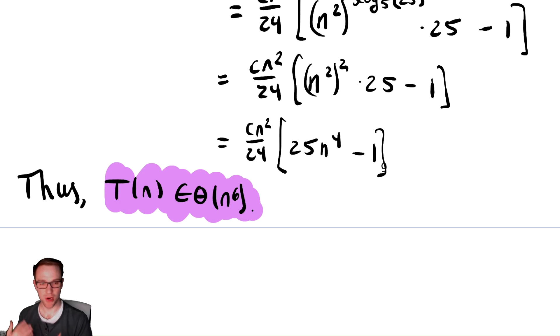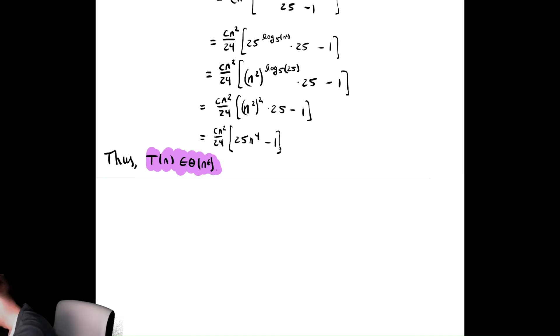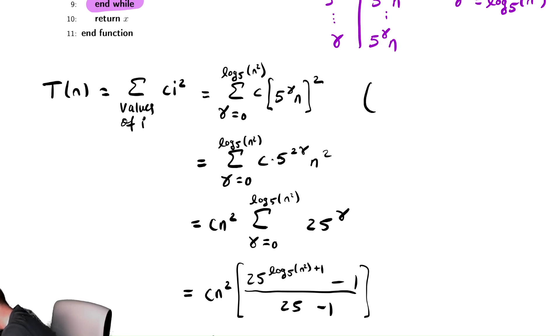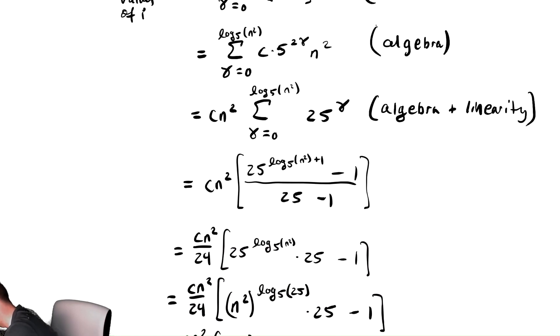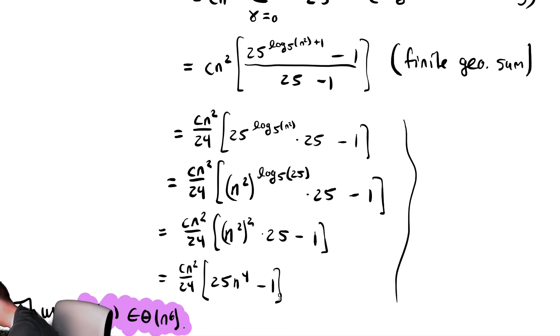And just as we've done in the past, maybe we go back and label our steps just so we can identify what we were doing along the way. So at the start, we replace our i squared with our gamma expression, so this is re-express in terms of gamma. We then do algebra, a bunch. This is algebra. Then algebra and linearity to factor out the cn squared. And then we use our finite geometric sum formula, finite geosum. And then all of these steps are algebra.